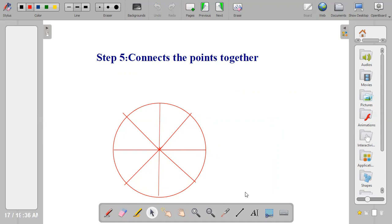So step five is to connect the points together. Connect the points together with a thick line in order to get your octagon across corners. 1, 2, 3, 4, 5, 6, 7 and 8. So try to connect the points together with a thick line.